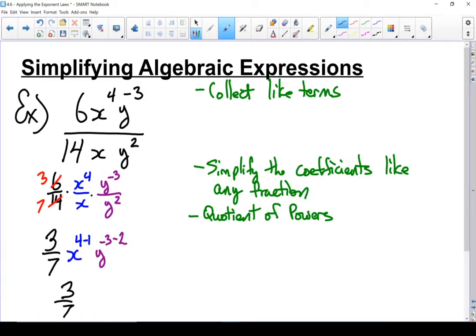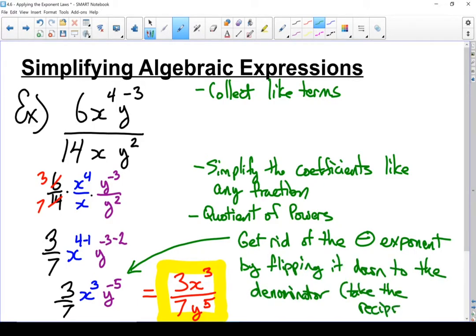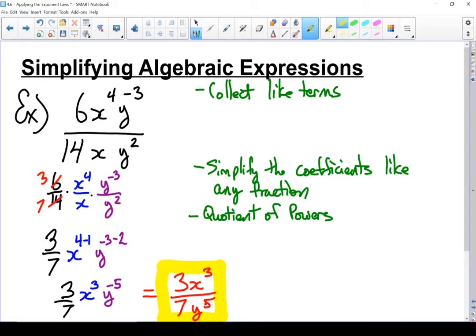Rewriting that, I've got 3 sevenths, 4 minus 1, so I've got x to the power of 3. And my y's, I've got y to the power of minus 5. I'm going to rewrite it so I don't have any negative exponents. So all I'm going to do is I'm going to flip that y down to the bottom of the expression. 3 sevenths stays the same, x cubed stays the same. In my numerator, I've got 3x cubed. And in my denominator, I've got that 7 and y to the power of 5. I've now simplified that algebraic expression.